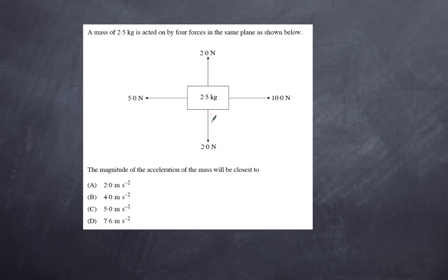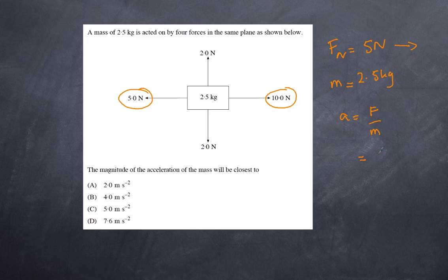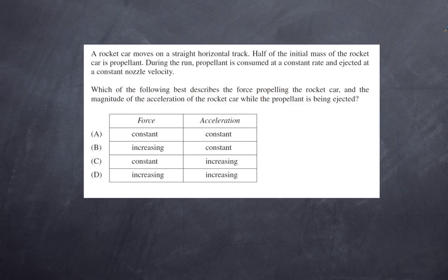The total net force results only from the ten newton force going right and the five newton force going left. The net force is simply five newtons towards the right. The mass is already given as 2.5 kilograms, so the acceleration is F over m, which equals five over 2.5, giving an acceleration of two meters per second squared. The answer is A.